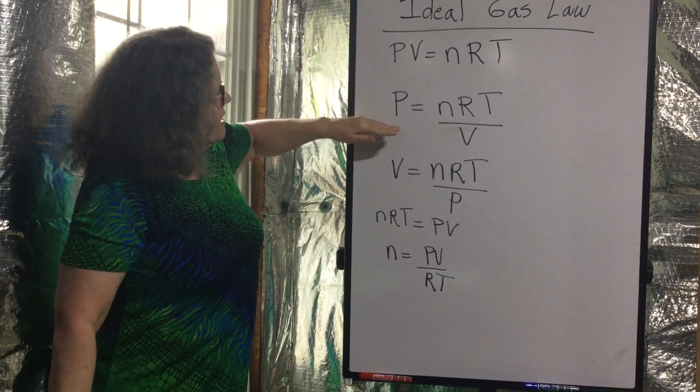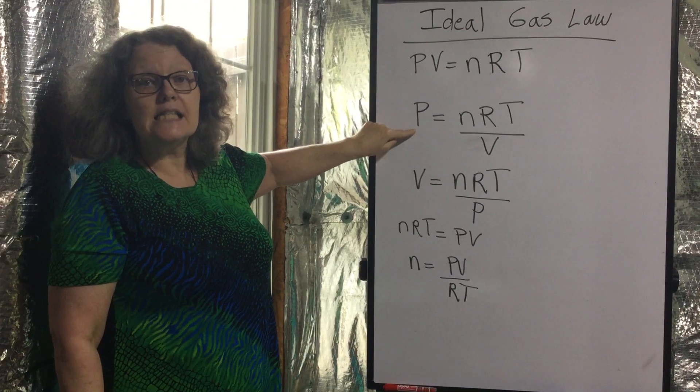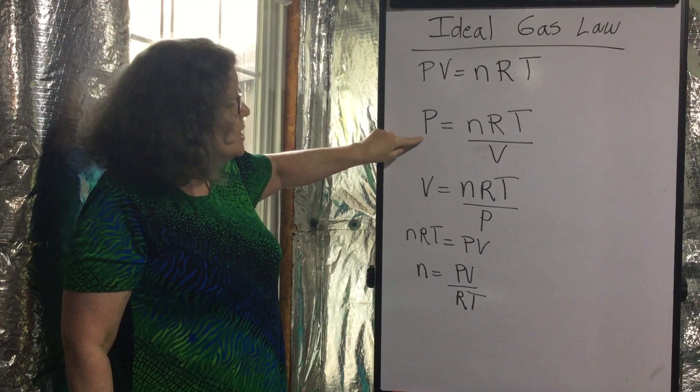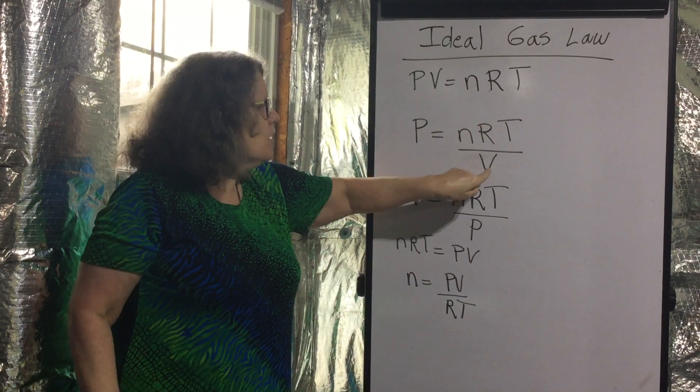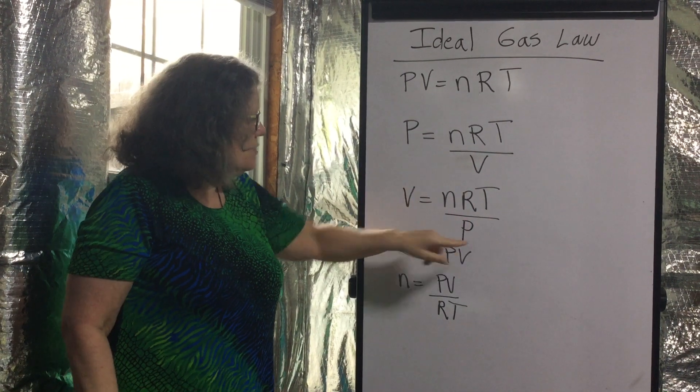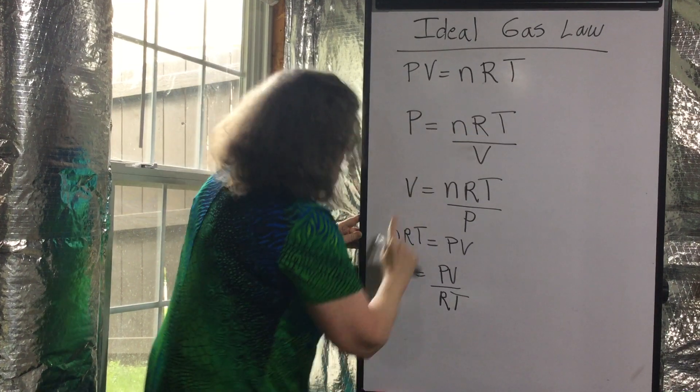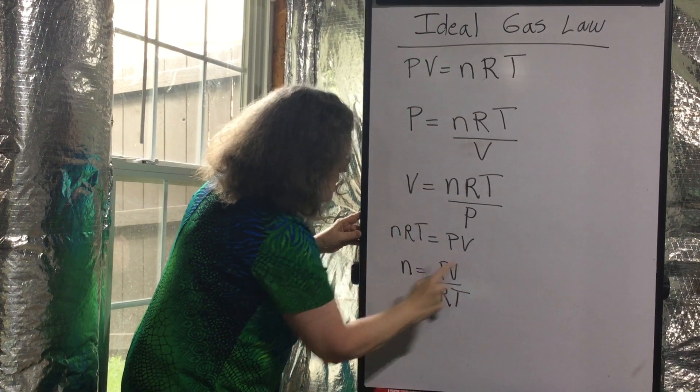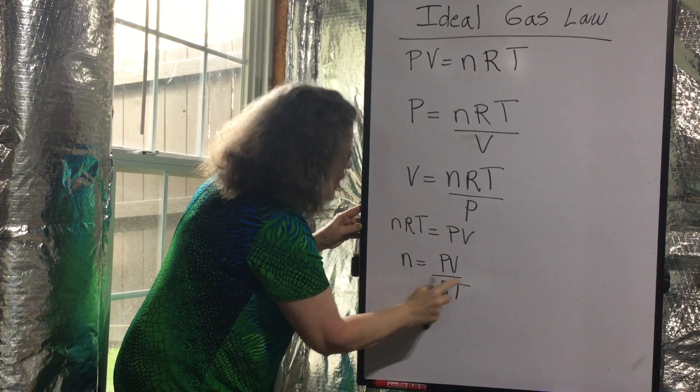So I set it up isolating P, pressure, as the unknown variable. P is NRT over V. Just isolate it algebraically. V is NRT over P. Now we know if PV is NRT, NRT is PV. So N is PV over RT.